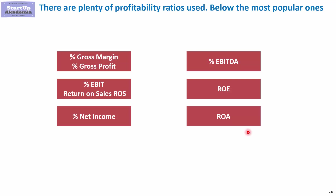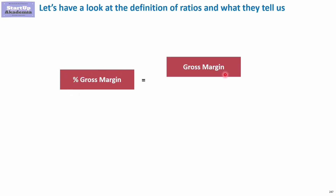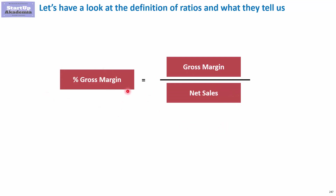Gross margin or gross profit as a percentage is simply the gross profit divided by net sales. This is one of the ratios tracked over periods of time for a specific company, but it is also compared to a benchmark group — usually companies from the same industry. It helps you see how good the company is at negotiating the purchase of products from suppliers and also how good it is with customers — whether they are able to keep prices at a level which sustains the gross margin.